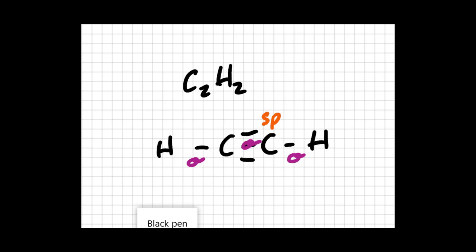Now those p orbitals would be perpendicular to the sp orbitals and perpendicular to each other. If you think of the sp orbitals on the y-axis, the remaining p orbitals would be on the x and the z-axis. Those p orbitals are going to be involved in that side-to-side pi bonding. It's not as strong as a sigma bond.